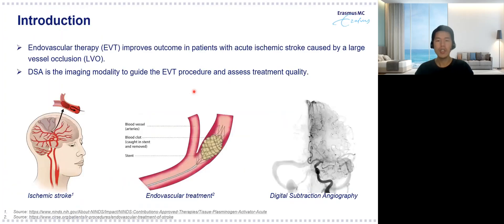To give a little bit of context, stroke is one of the leading causes of death and disability. A recent study has shown that endovascular therapy improves outcome in patients with acute ischemic stroke caused by a large vessel occlusion. Nowadays, digital subtraction angiography is the preferred imaging modality during endovascular treatment for both guiding the procedure and assessing the treatment quality.